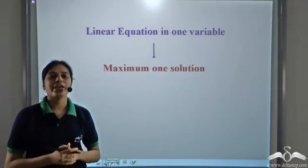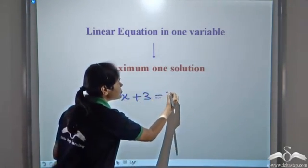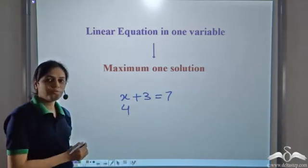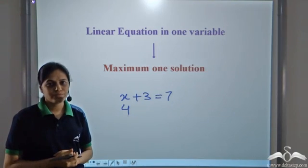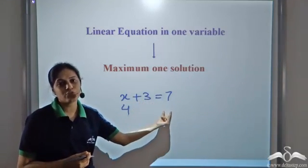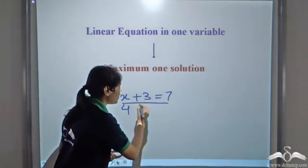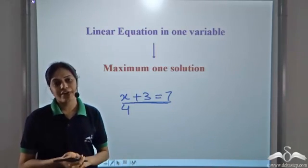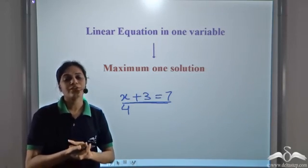A linear equation in one variable has just one solution. For x + 3 = 7, what added to 3 gives 7? It is 4. There is no other value of x which when added to 3 gives 7. So there exists only one value of x which makes this equality hold. A linear equation in one variable has just one solution — only one value of the variable which makes it true.